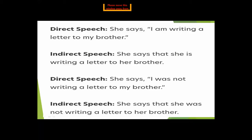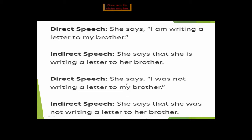We added 'that' and omitted the inverted commas. We did not change the tense because the reporting verb is in present tense. Next example: 'She says, I was not writing a letter to my brother' becomes 'She says that she was not writing a letter to her brother.' The pronouns 'I' and 'my' — both first person — are changed according to the subject of the reporting verb.